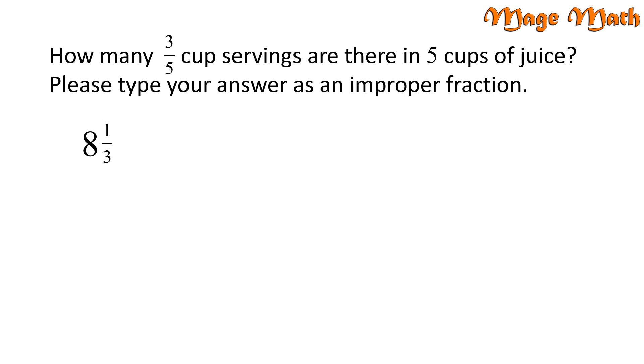Oh wait! Our problem wants us to write the answer as an improper fraction. This means we need to convert it from a mixed number. Start by multiplying 3 times 8, which gives us 24. Then we need to add the 1. That equals 25. And our denominator is still 3. So 8 and 1 third is equal to 25 thirds.